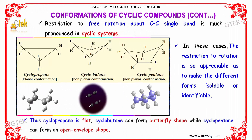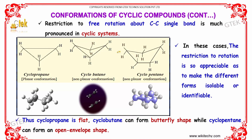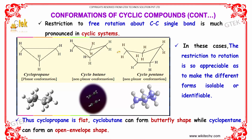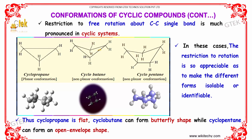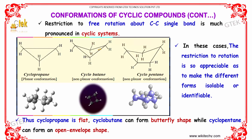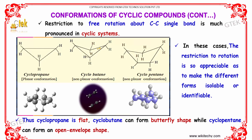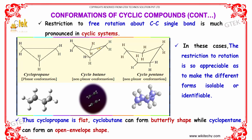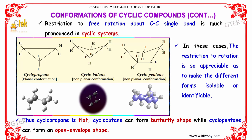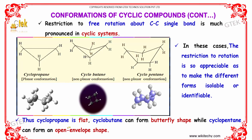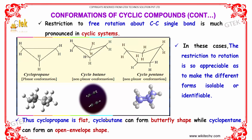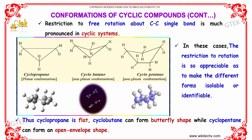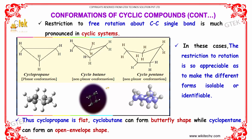Restriction to free rotation about the C single bond C bond is much more pronounced in cyclic systems. In these cases, the restriction to rotation is so appreciable as to make the different forms isolable and identifiable. Thus, cyclopropane is flat, whereas cyclobutane can form a butterfly shape, while cyclopentane can form an open envelope shape, as we can see here.